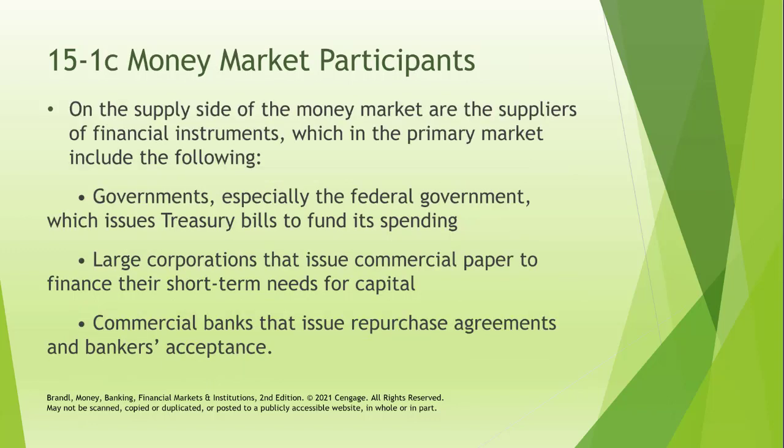On the supply side of the money market, T-bills issued by the US government are one of the major assets traded. Every major country with well-developed financial markets has a short-term debt market — the UK, Germany, Italy, Japan — often called different things depending on the country. They're not all called T-bills, but the concept is the same.